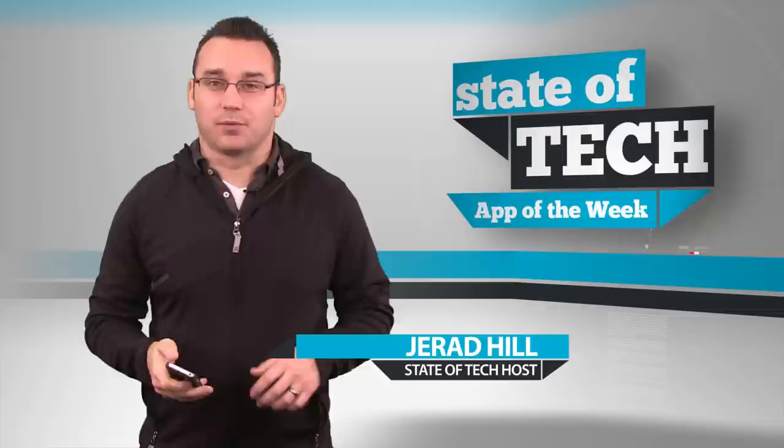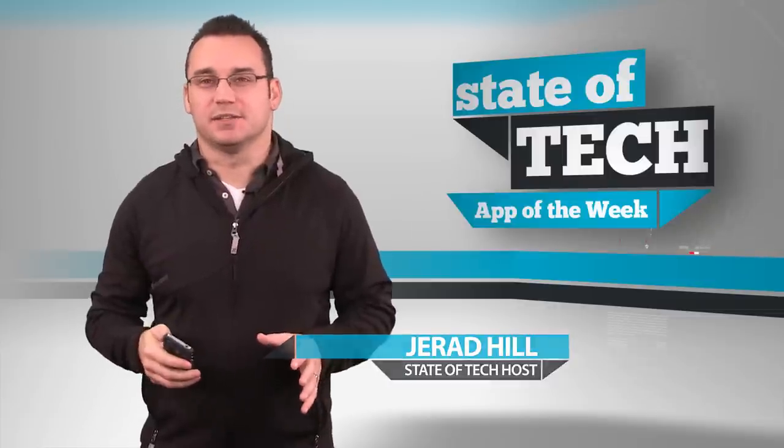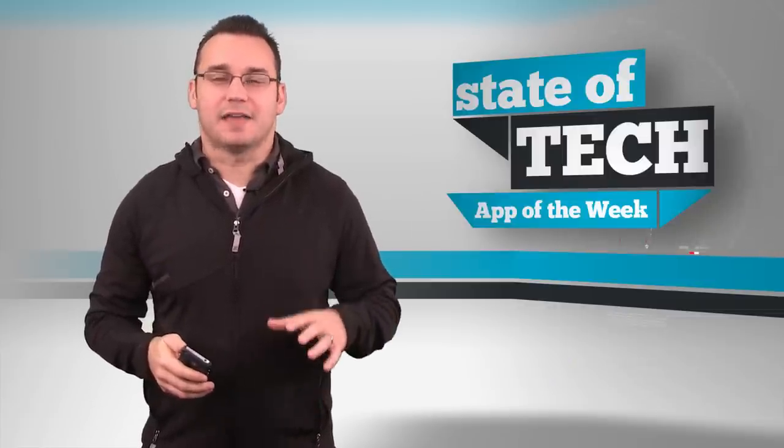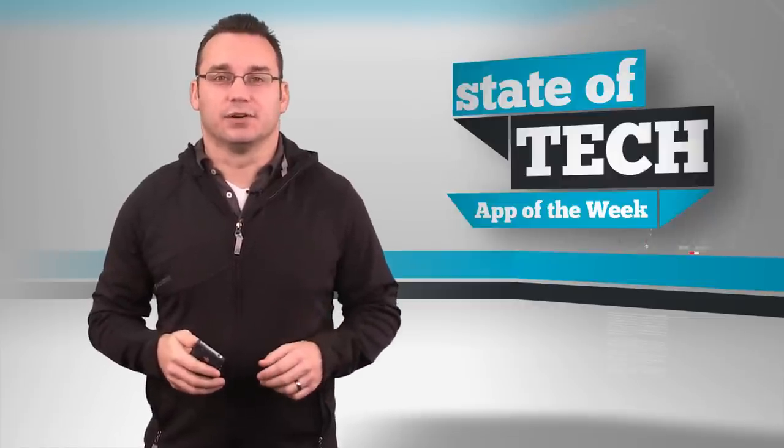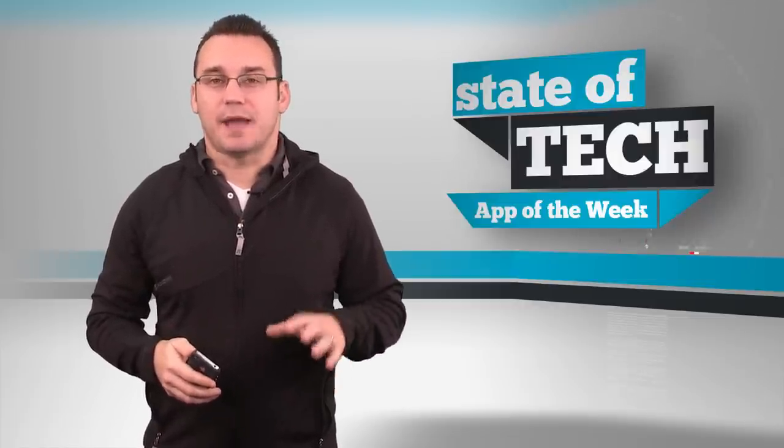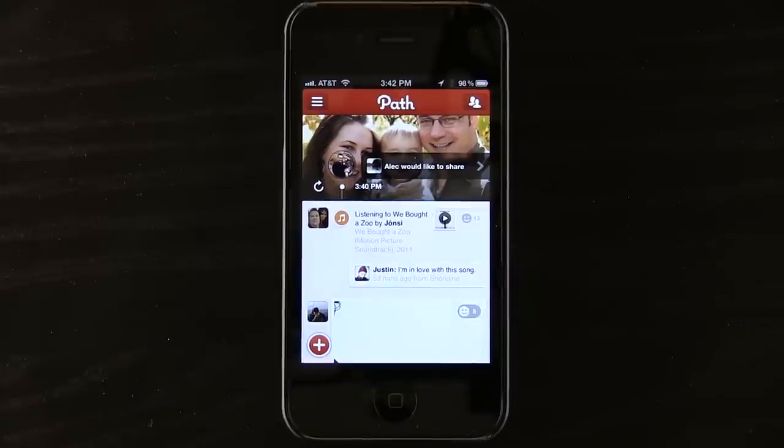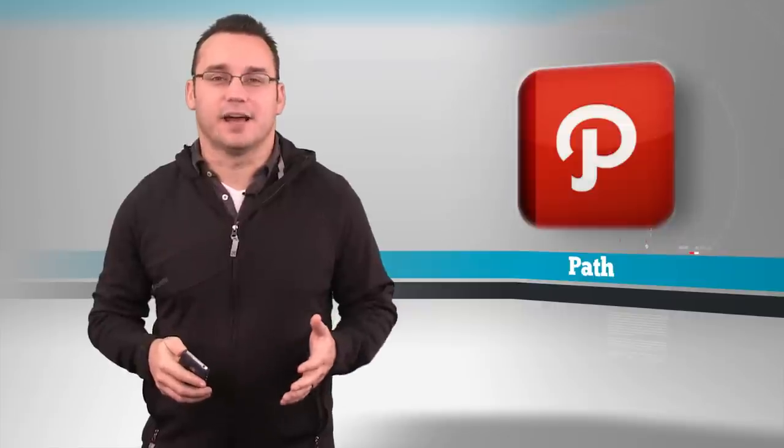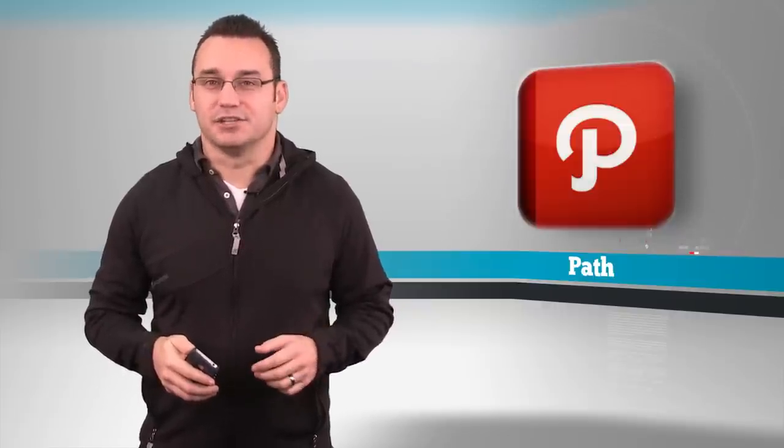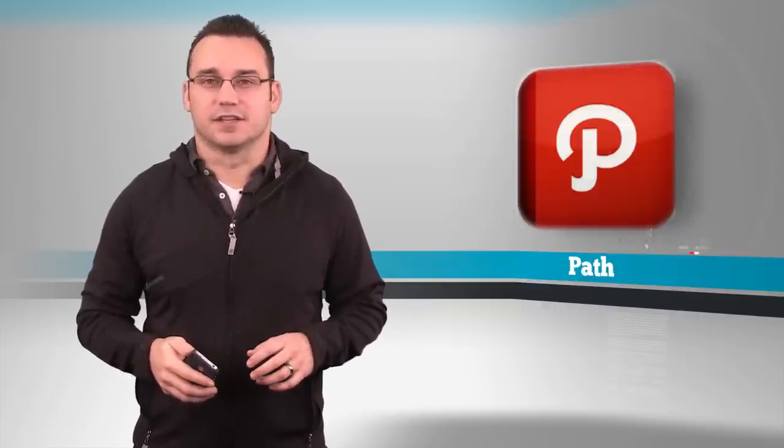Path is a new social network, not really new, but it's came into its own recently. Path is a social network that allows you to manage a smaller amount of people while still managing your other social networks. So Path has a limit of 150 friends, which a lot of people have probably complained about because that seems like a small number, but in reality how many friends can you really manage at once? I think 150 is a great limit.